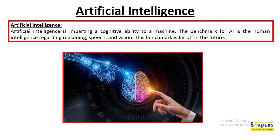Welcome. Let's understand artificial intelligence. Artificial intelligence is imparting a cognitive ability to a machine. The machine we are referring to here can be a computer or an agent. Cognitive abilities are the brain skills — the ability to learn, the ability of decision making, and the ability of logical thinking.